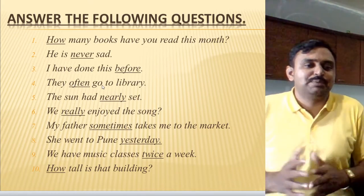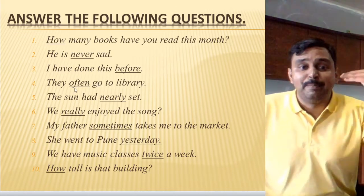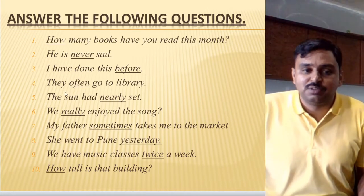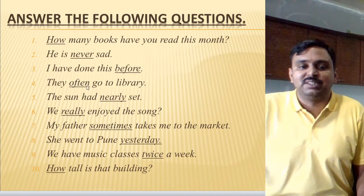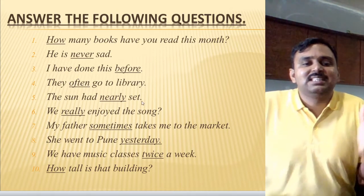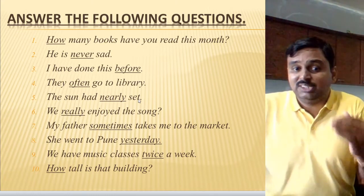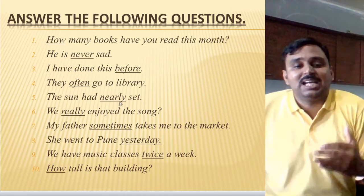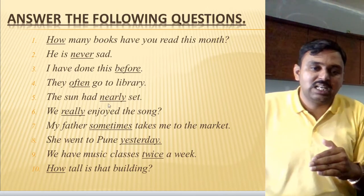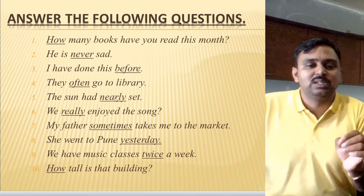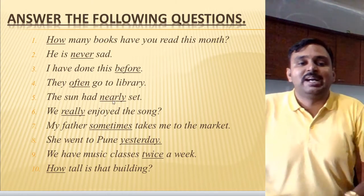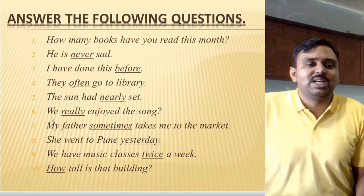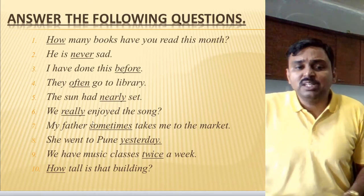Example four: 'They often go to the library.' How many times do they go? Often — many times. So it is counting the action happening many times, and 'often' is an adverb of frequency. Example five: 'The sun had nearly set.' The sun has set, but it was nearly set, not completely. So 'nearly' shows how much level the action happened — it is an adverb of degree.